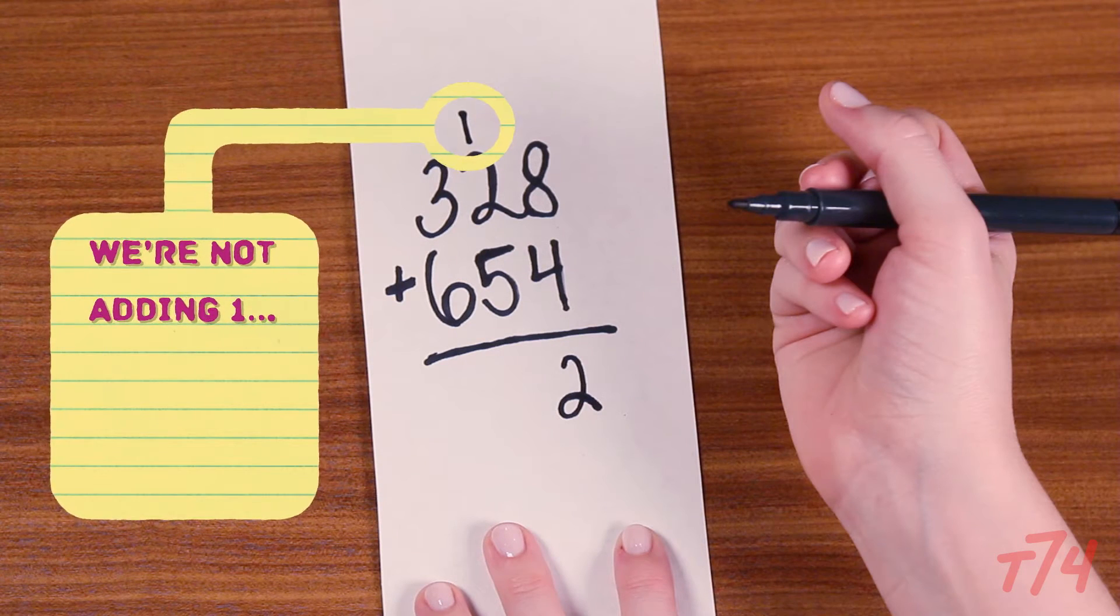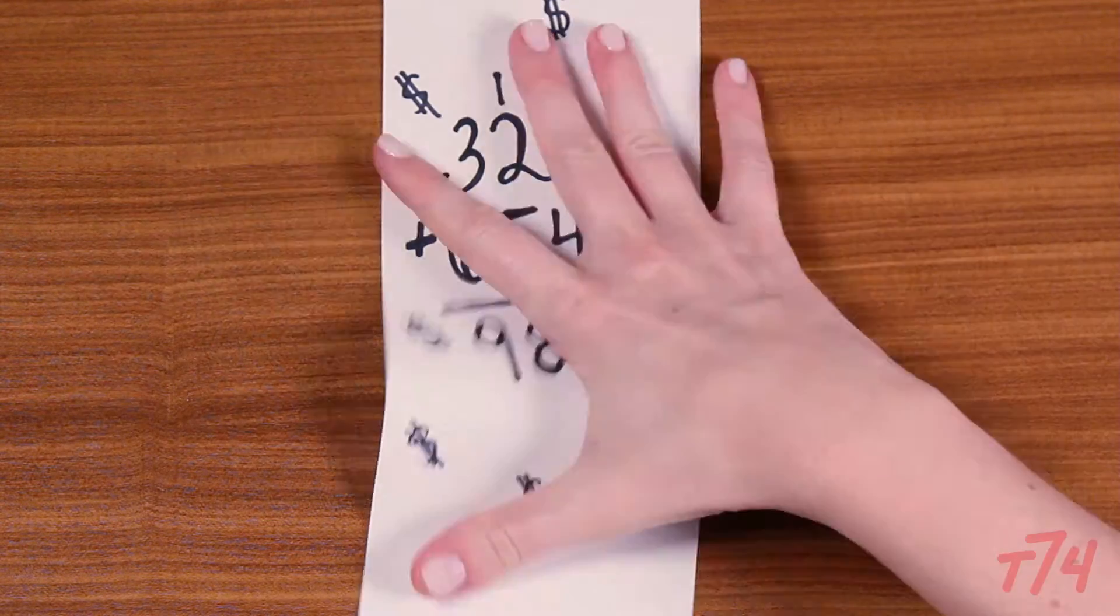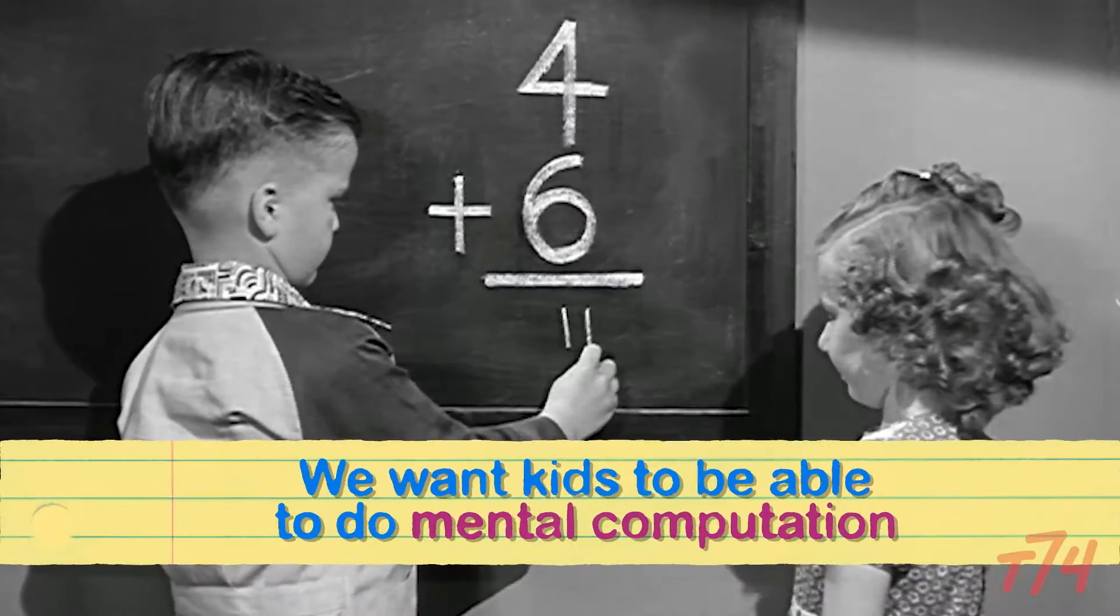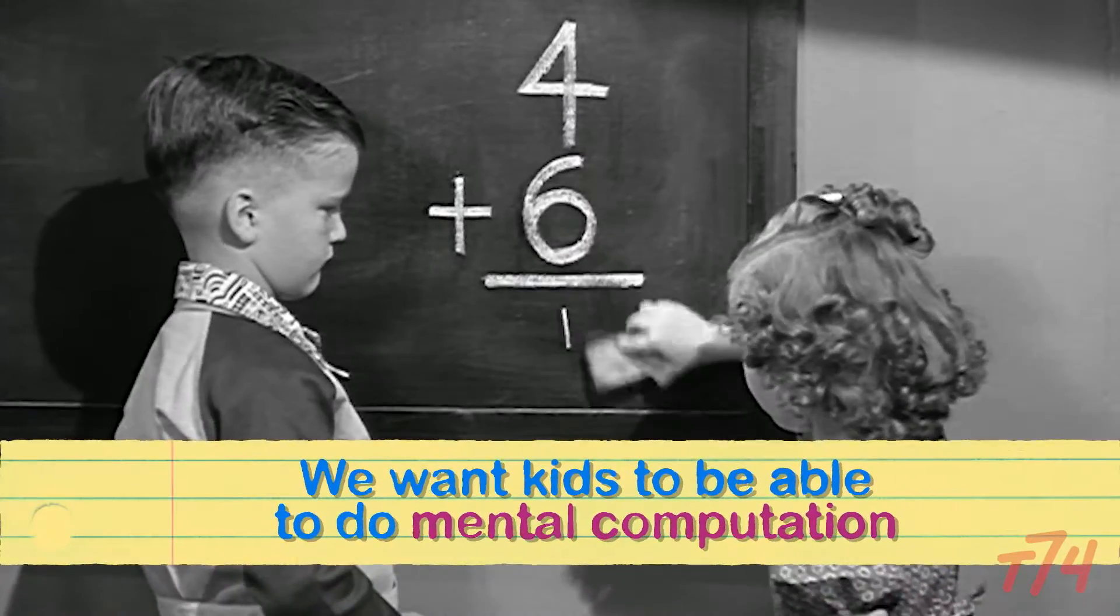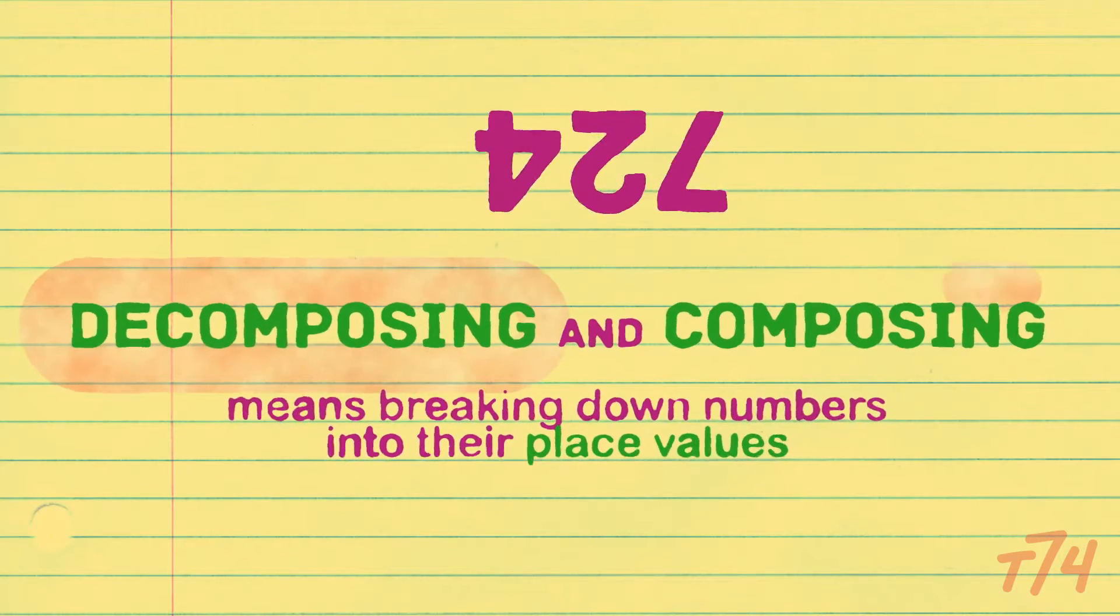In this problem we're not adding a 1 even though that's what we're writing. We're actually adding a 10, since the 2 is in the tens place. We want kids to be able to do mental computation. We don't always have paper and pencil, so we use decomposing and composing numbers.